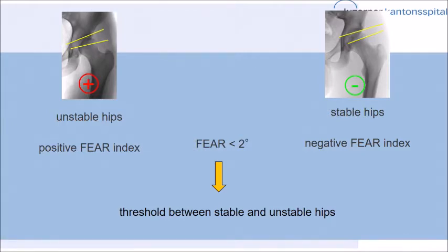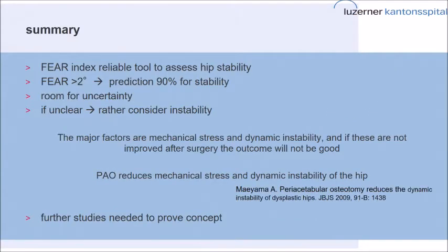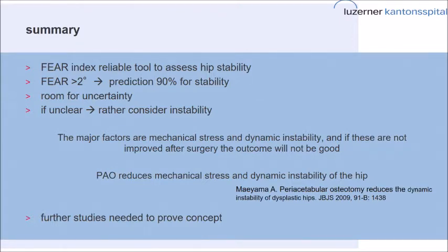Unstable hips are those that have a positive FEAR index, and stable hips have a negative index, with the threshold at 2 degrees. I personally use 0 degrees in daily practice, but 2 degrees may be a good threshold to work with. The FEAR index is a reliable tool to assess hip stability with a high prediction value, though there is still some room for uncertainty. If it's still unclear whether the hip is unstable, rather consider that it may be unstable — because the major factors are mechanical stress and dynamic instability, and if these are not improved during surgery, the outcome will not be good.